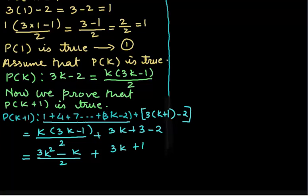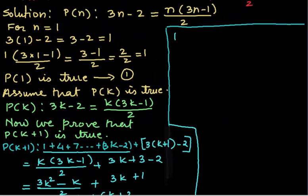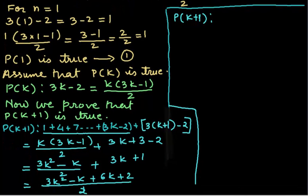The least common multiple will be 2. So it will be 3k squared minus k plus 6k plus 2. From this we will get P(k + 1) as 3k squared plus 5k plus 2 over 2.